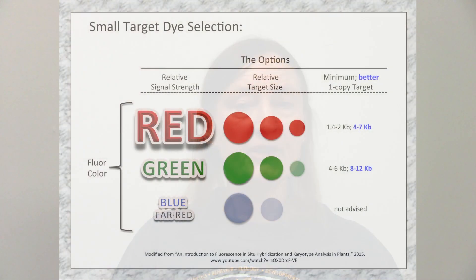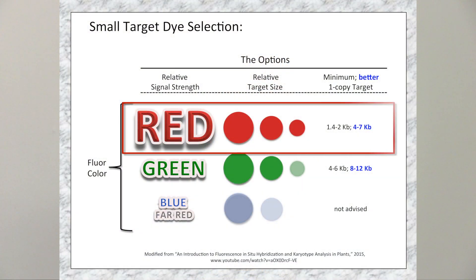With regard to choosing a fluorochrome, small targets need all the signal strength possible, so red is the color of choice. Probes labeled with green can then be used for reference marker identification.